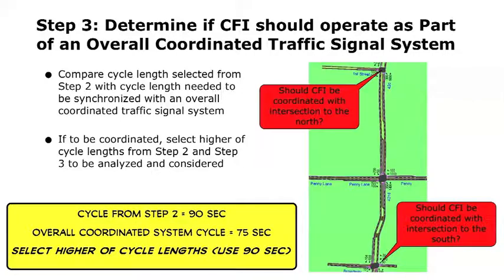If it is to be coordinated, select the higher cycle length from Step 2 and Step 3 to be analyzed and considered. From Step 2, it was decided that a 90-second cycle length was adequate. The overall coordinated system cycle for this example is 75 seconds. So we're going to go with the higher cycle length, 90 seconds. What I would do is go back and adjust the nearby signals to 90 seconds in order to provide coordinated operation along the arterial.